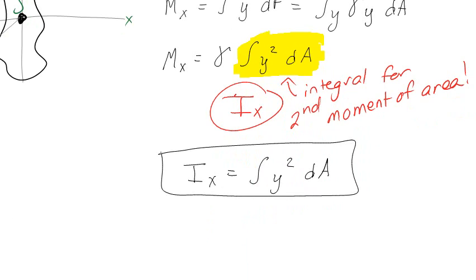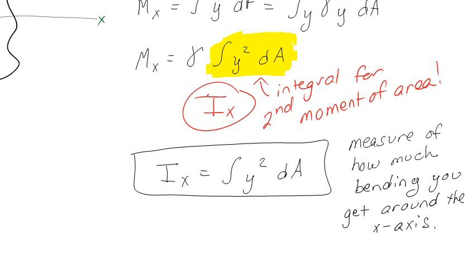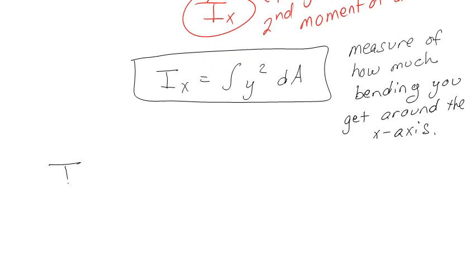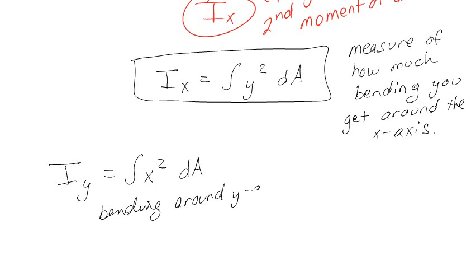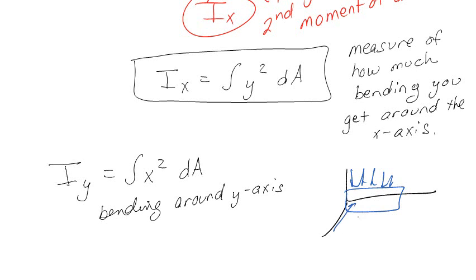So that's the second moment of area around the X-axis. Basically what this is doing is predicting how much resistance you're going to get to bending around the X-axis — it's the measure of bending resistance around the X-axis. I can also find I_Y the exact same way, and that's going to be bending around Y. The purpose in statics is just to get you comfortable calculating these, not actually applying them yet.